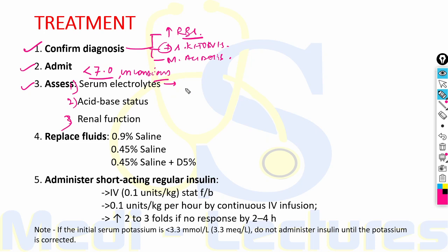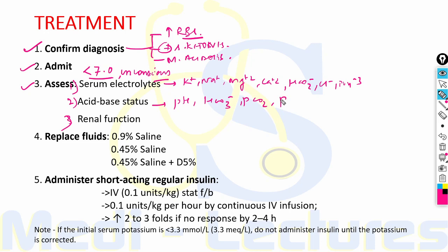Assess serum electrolytes — potassium, sodium, magnesium, calcium, bicarbonate, chloride, and phosphate. For acid-base status, assess arterial pH, bicarbonate levels, pCO2, and beta-hydroxybutyrate, which is the major ketone body in DKA. Renal function can be assessed by serum creatinine levels and monitored by urine output.